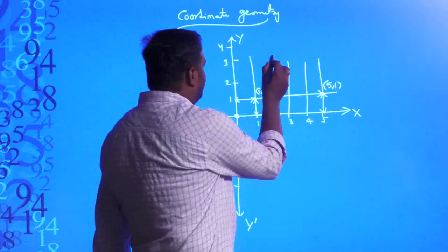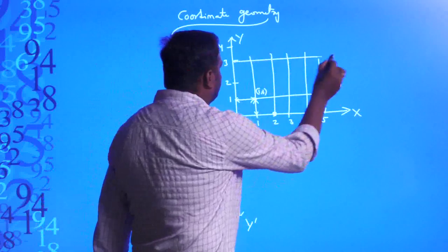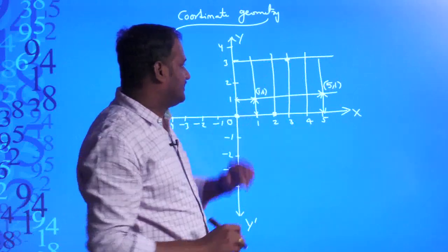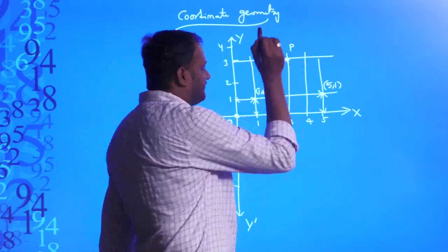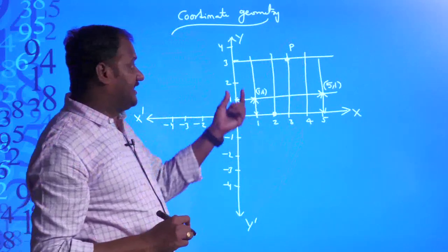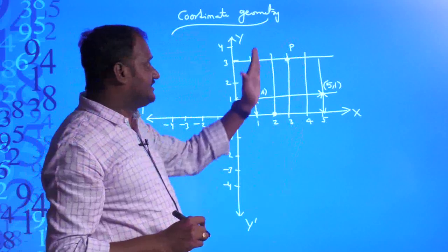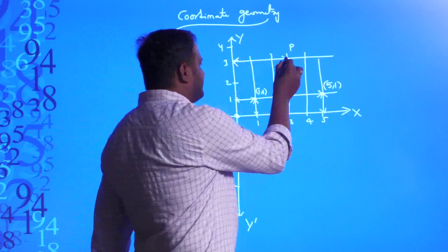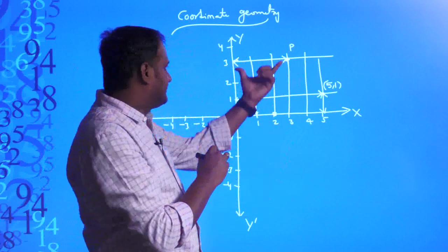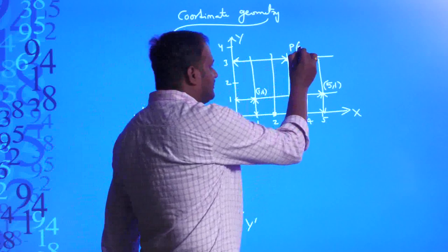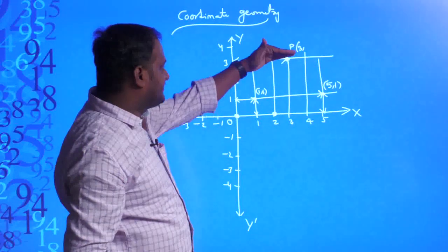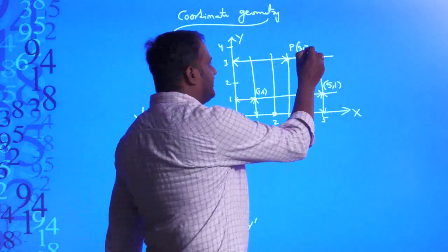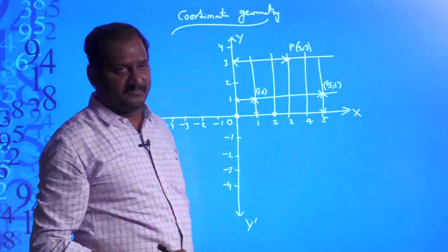Similarly, I draw a horizontal line through 3 on the y-axis. I want to find point P. The distance of point P from the y-axis is exactly 3 units. And the distance from the x-axis is also 3. So the point P is (3, 3).